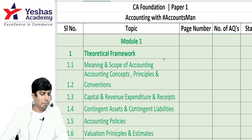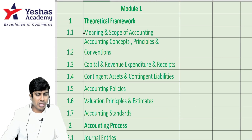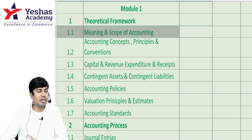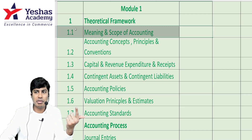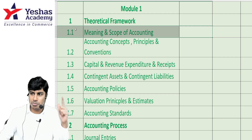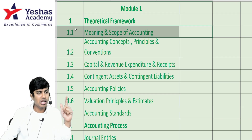Let's quickly start with Chapter 1, theoretical framework. When you are doing theoretical framework — meaning and scope of accounting — don't focus on the definition, but remember limitations, functions, and measurement principles. Limitations, characteristics, features, and functions: please do read that without fail.